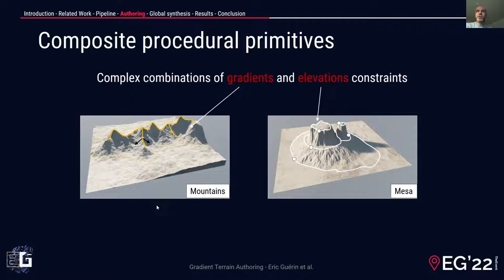It is also possible to obtain complex combinations of constraints to build high-level tools and brushes. For instance, a mountain brush consists of the creation of a gradient field around a crest line. This is combined with a tensor-oriented noise to mimic erosion features around the crest line. Hard constraints can be combined at different altitudes to easily obtain a mesa effect.